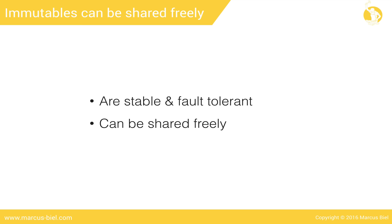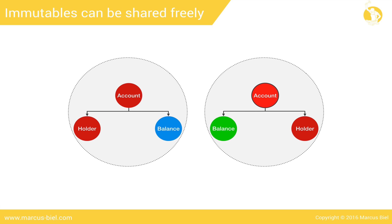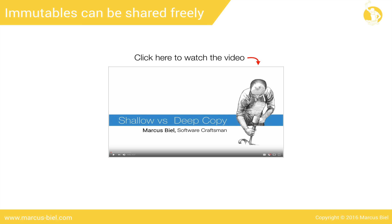Since immutables don't change, they can be shared freely. In this example, two mutable account objects are sharing the same balance attribute. If the account object on the right changes the balance, this will also indirectly influence the account object on the left. However, if the balance attribute is immutable, when the account object on the right tries to change the balance object, it will not change but return a new object instead, so there will be a second balance object. For the same reason, an immutable does not need a copy constructor when copying an object. If you'd like to learn more about cloning and copy constructors, check out my video on Shallow vs Deep Copy.